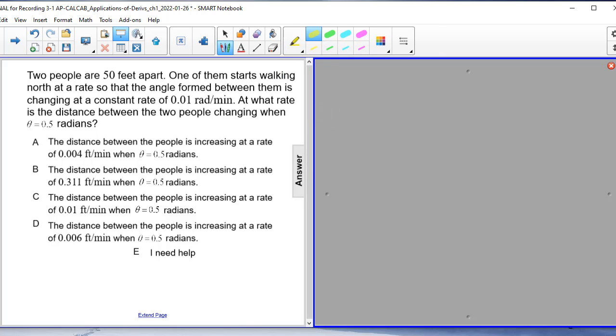Two people are 50 feet apart. One of them starts walking north at a rate so that the angle formed between them is changing at a constant rate of 0.01 radians per minute.